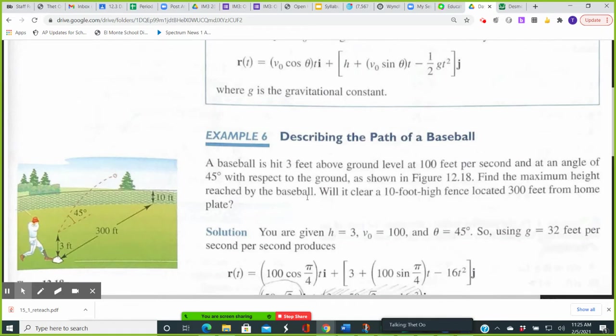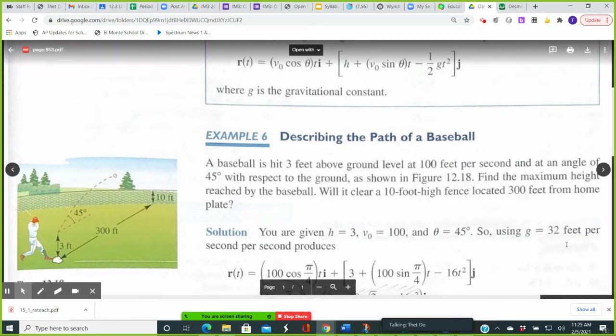So we want to consider this graphically first before we look at it analytically using calculus. We can extract from the problem statement that the initial conditions are: the initial height is three feet, the initial speed is 100 feet per second, and the value for theta is 45 degrees. And because height is measured in feet, the gravitational constant will have a value of 32 feet per second squared.